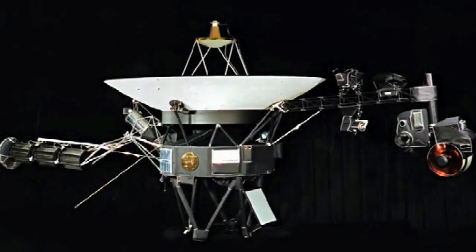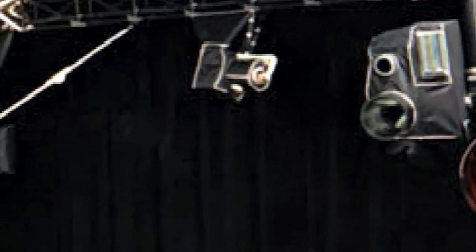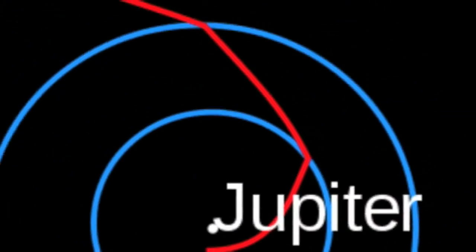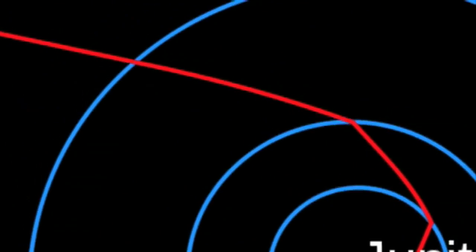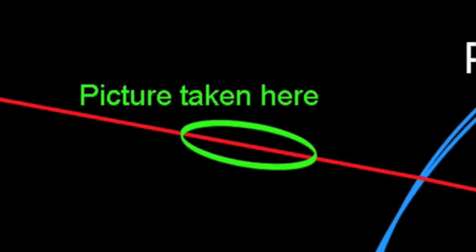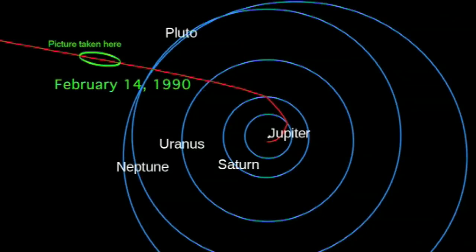The connection with Valentine's Day is that 20 years ago a little spacecraft called Voyager 1 shooting out to the outer reaches of the solar system, its mission finished to explore the planets, was commanded to turn around and take a family portrait of our solar system. The connection with Valentine's Day is that it was on February 14, 1990.